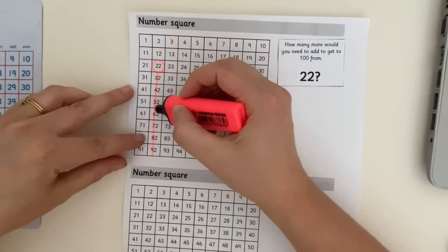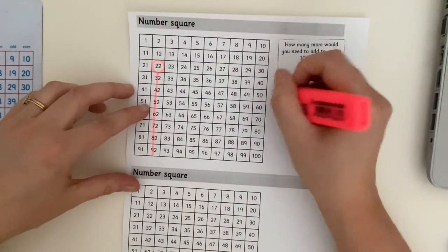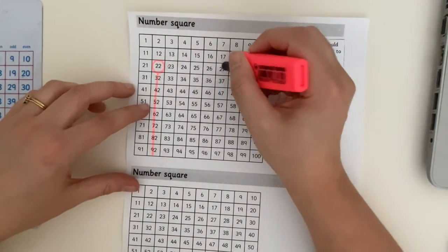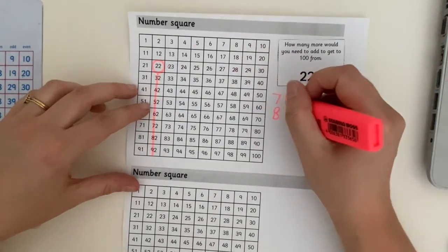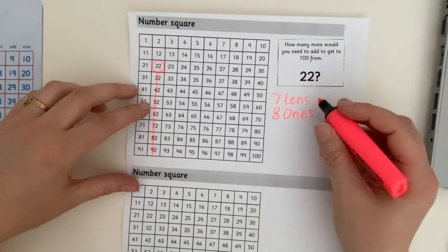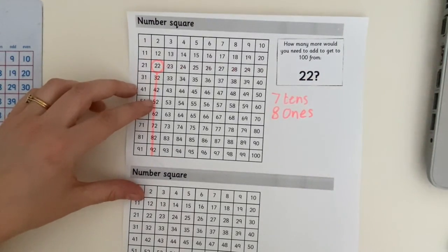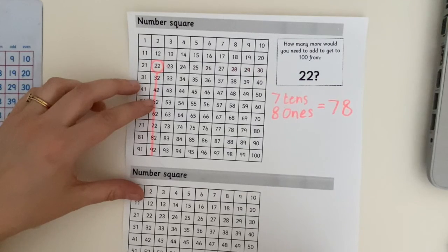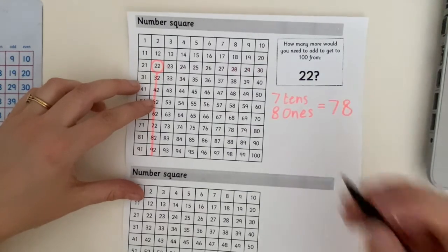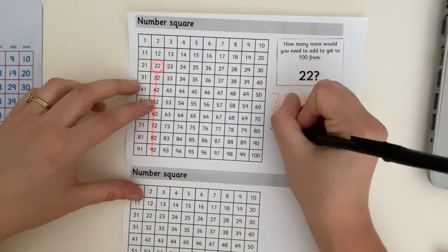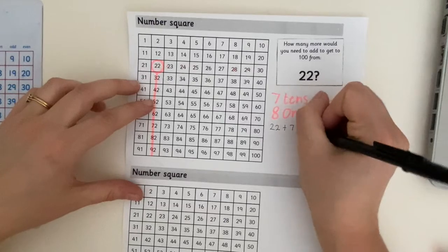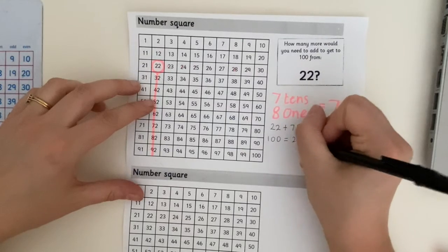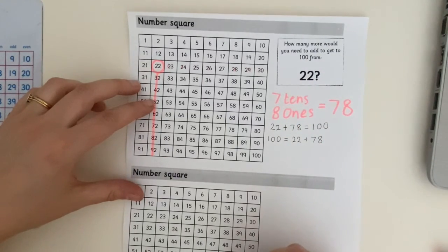One, two, three, four, five, six, seven. Seven tens. One, two, three, four, five, six, seven, eight. Eight ones. Okay. Let's put that number together. Seven tens and eight ones. Seventy eight. Okay. So we could say 22 add 78 equals 100. 100 equals 22 add 78.